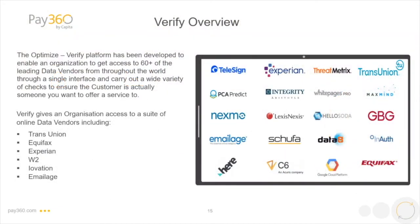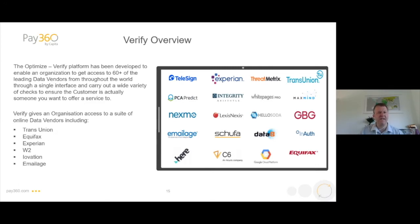Focusing on Verify, it's ultimately a data vendor aggregation platform. In the public sector, the main players are Experian, TransUnion, Equifax, and GB Group here in the UK — the main sources for data and checks, with some international offerings as well. Many of you on the call may already have departments with an Experian or TransUnion relationship. The key thing about Verify is that they're all available in one place — one integration, one portal, one reporting portal — and that is the core power of the Verified platform.